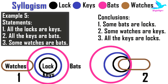Conclusion 1, 'Some bats are locks' — definitely true, because some parts of the bigger circle bats come within the smaller circle for locks. Conclusion 2, 'Some watches are keys' — as per figure 1, watches and keys are different entities, but as per figure 2 some watches are definitely keys. Hence this conclusion remains uncertain. Conclusion 3, 'All keys are locks' — false, as locks is a much smaller portion of keys, so all keys cannot be locks. Therefore only conclusion 1 can follow: some bats are locks.